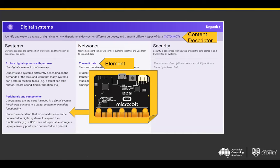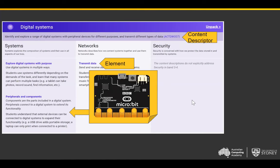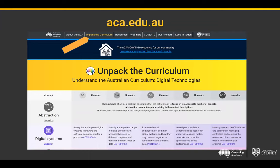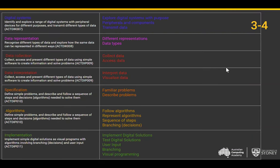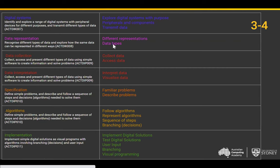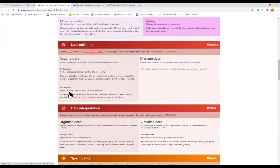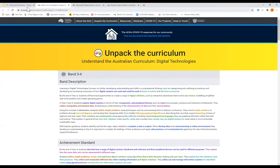One thing to note: due to slide size I wasn't able to fit the full description of every element, but they'll all be linked. Head to our 'Unpack the Curriculum' page and have a play. You can look at different band levels and go into depth. This is how I've represented it — all content descriptors on the left for the 3–4 band, and element titles on the right. Clicking through takes you to where they're highlighted.